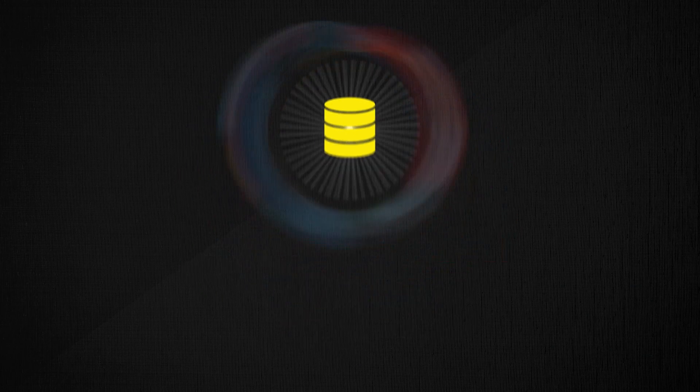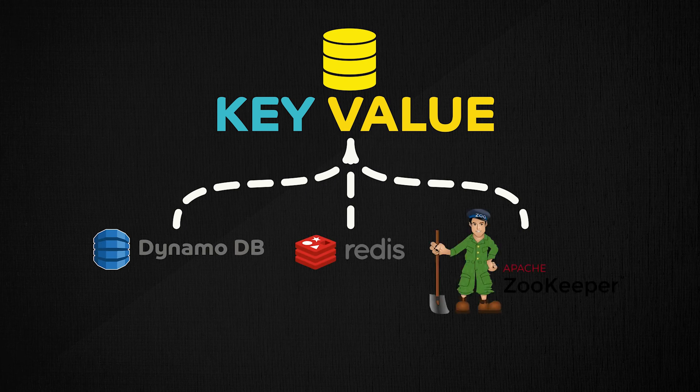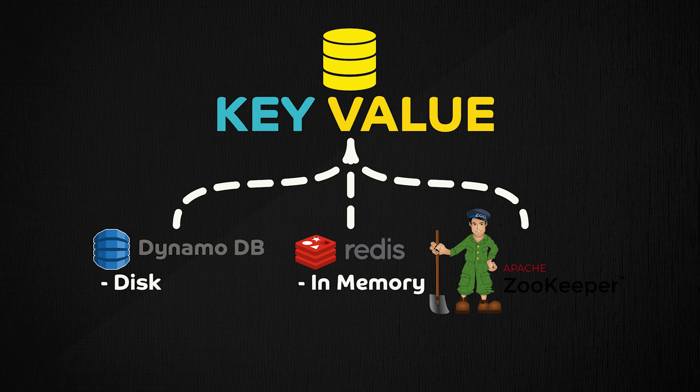There are a lot of databases out there and naturally there are various types of key value stores — for example, DynamoDB, Redis, and Zookeeper — and different key value stores may behave differently. Some, such as DynamoDB, write data to disk, meaning the data will persist even if they crash. Others, such as Redis, might only write data to memory, and if they crash you will lose the data. This is a trade-off you make for faster operation, which depending upon your use case might be totally acceptable.